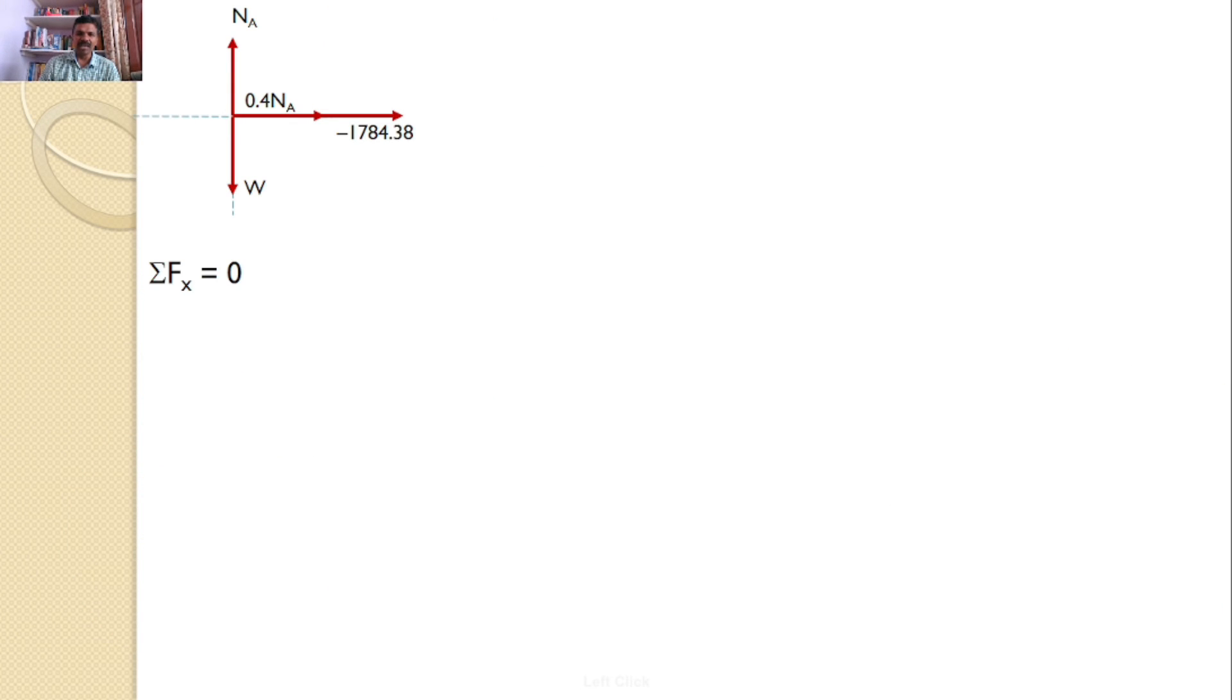Now, by applying equilibrium equation sigma FX = 0, I can write 0.4 NA minus 1780, and I got NA = 4450. And then sigma FY = 0, there are only two equations, W and NA, and W = NA = 4450, and this is the answer for the given problem.